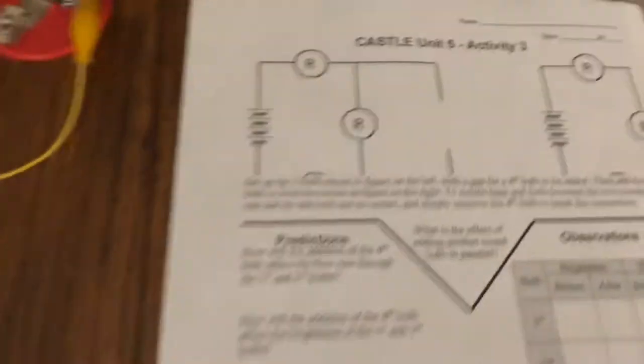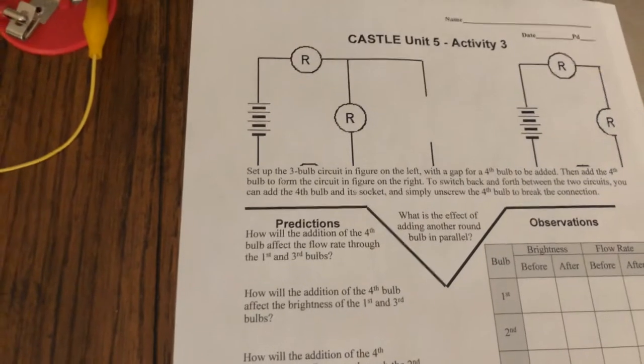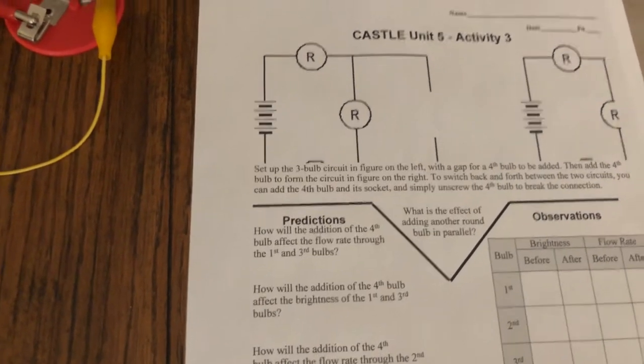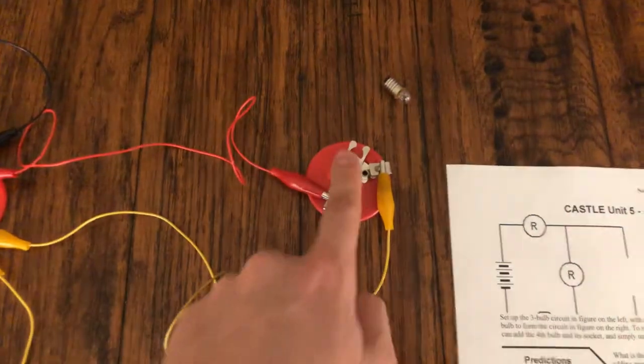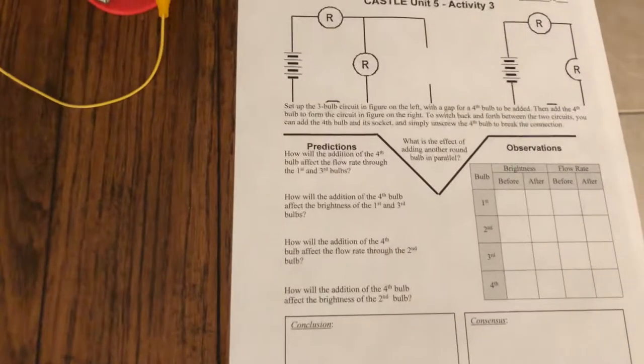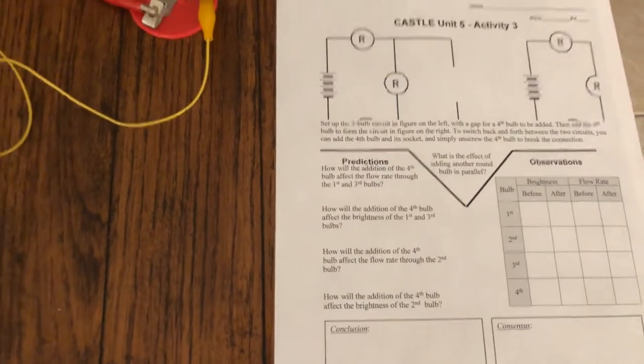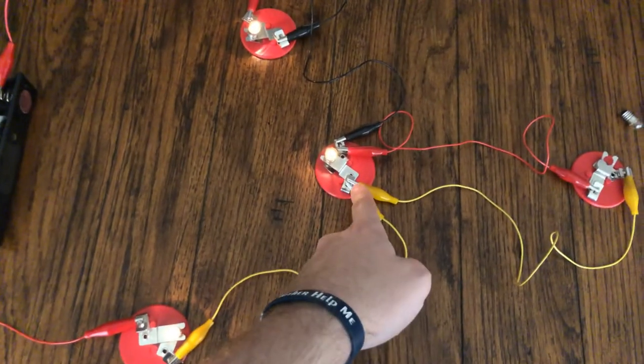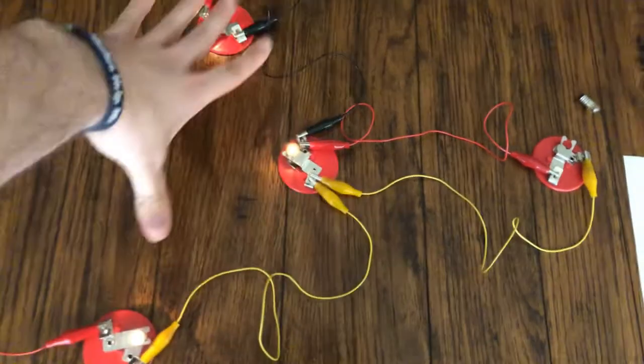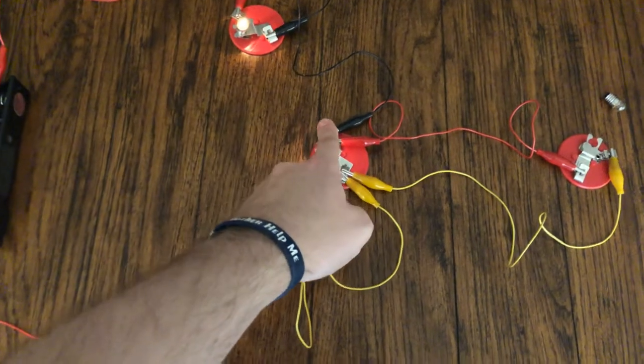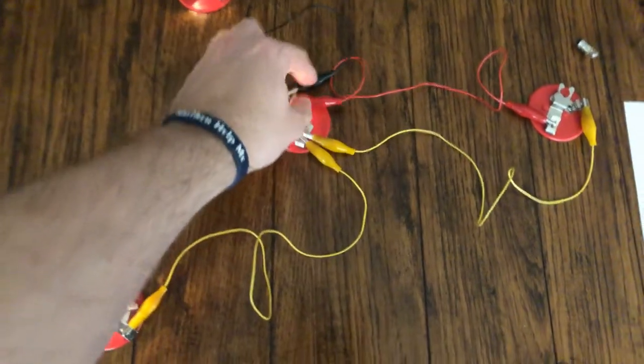I want you to also fill out your predictions. Let's take a look at the questions. How will the addition of the fourth bulb, that's this one right here, affect the flow rate through the first and third bulbs? So if I add another bulb in parallel with this one but not with these two, what you are going to see is that the charge has another path to flow through.